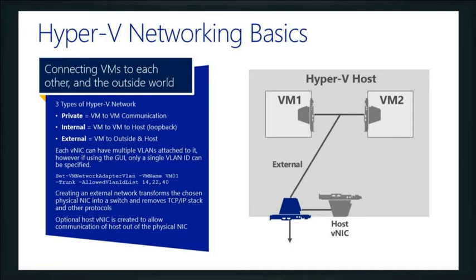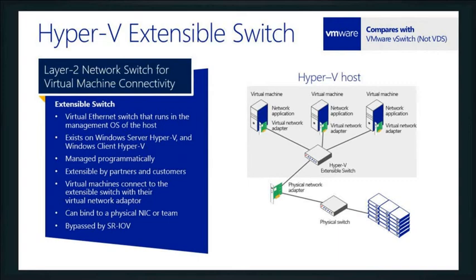Underneath the covers we have a layer two networking switch, and this is where you'll see some big differences between how we do things compared to VMware. The Hyper-V extensible switch built into Hyper-V servers compares to VMware's vStandard switch — not the virtual distributed switch. To do those types of things, that's where VMM or vCenter comes into play. We're talking about a standard switch environment here, so this is just what's built into Hyper-V itself.